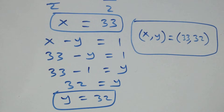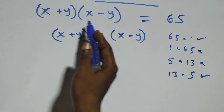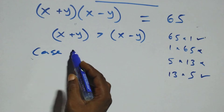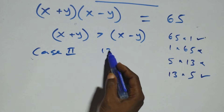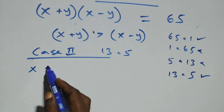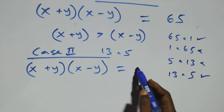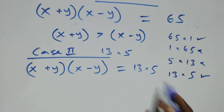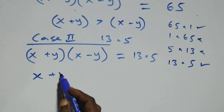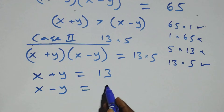Now let's consider Case 2, which is 13 times 5. The equation x plus y, open bracket, x minus y, becomes equal to 13 times 5. That is, the first bracket x plus y equals to 13, and the second bracket x minus y equals to 5.